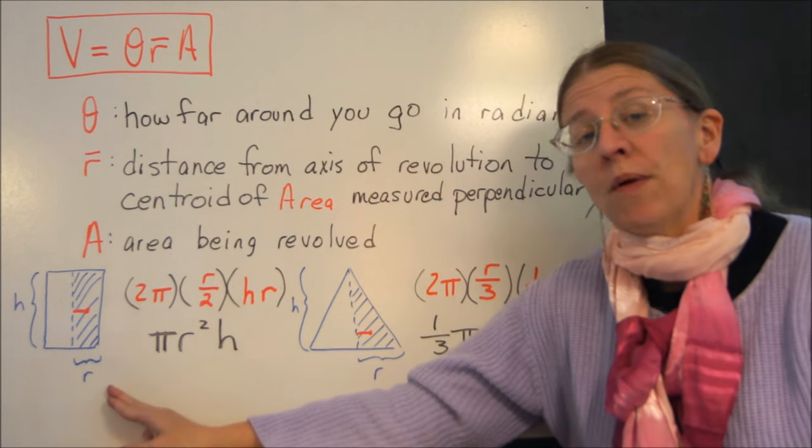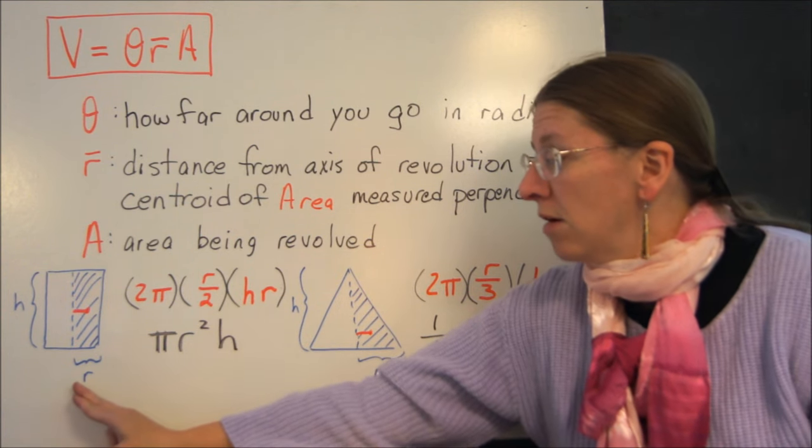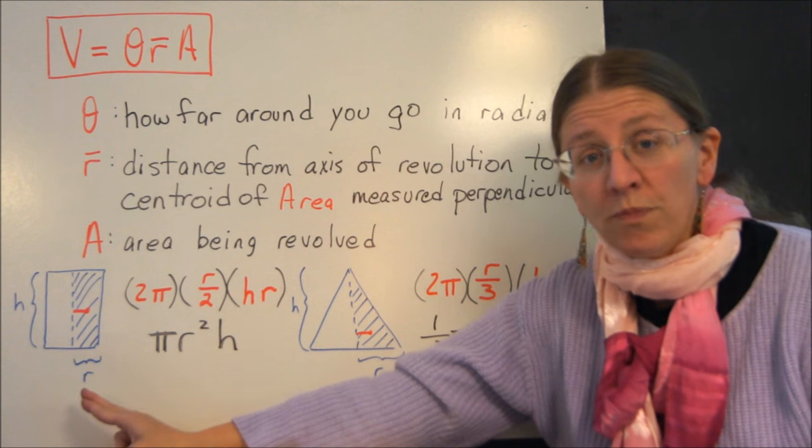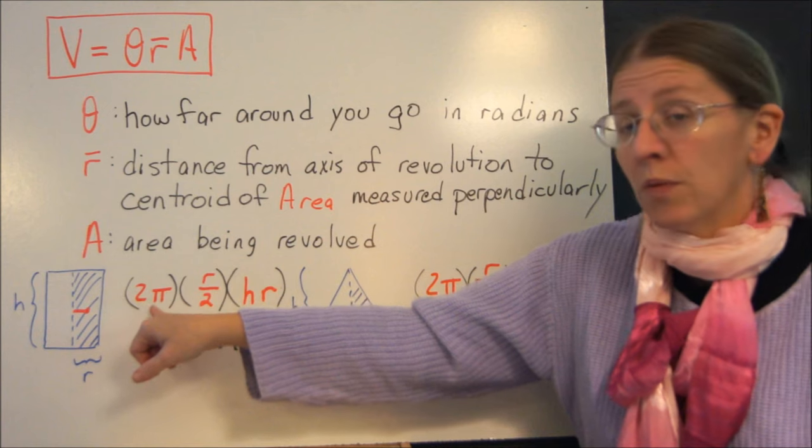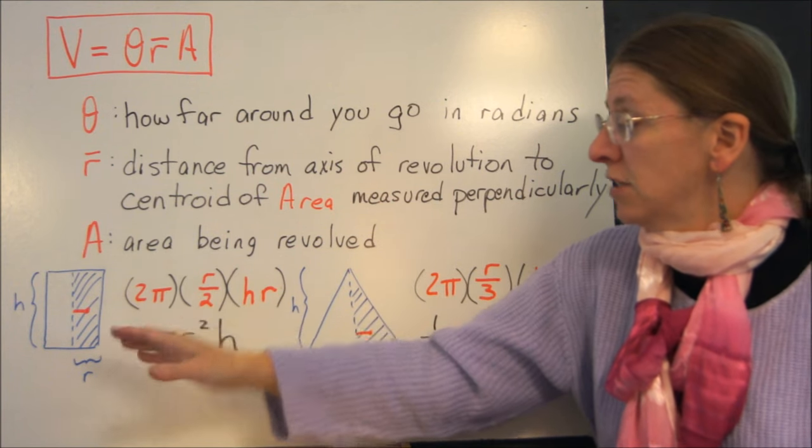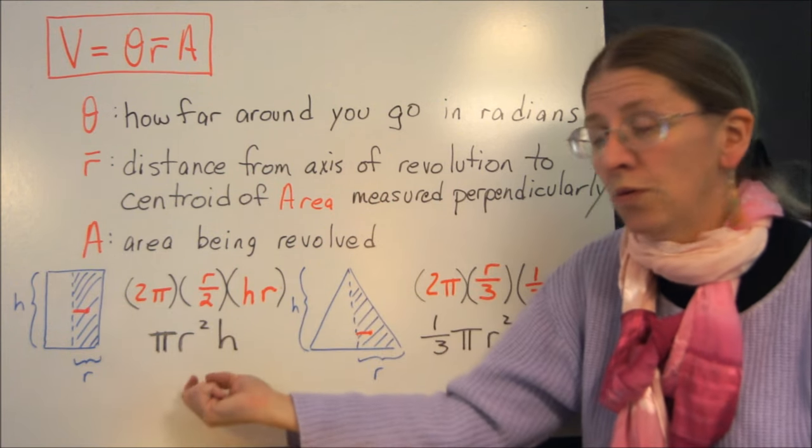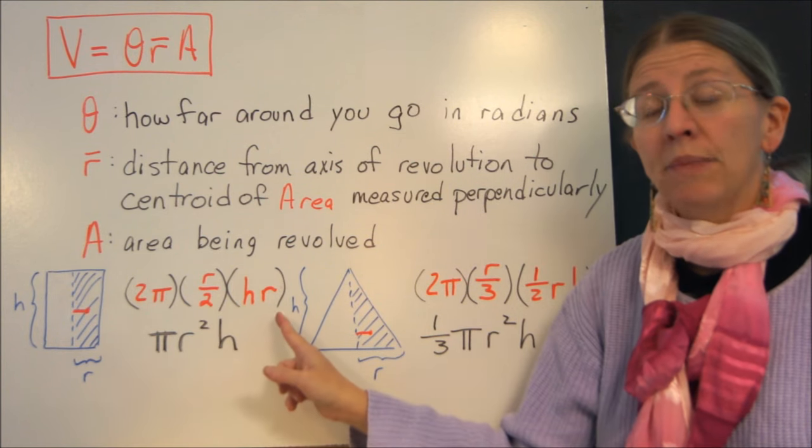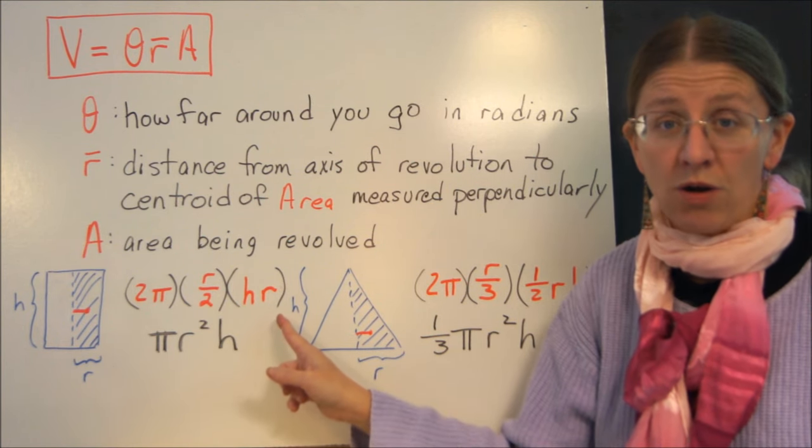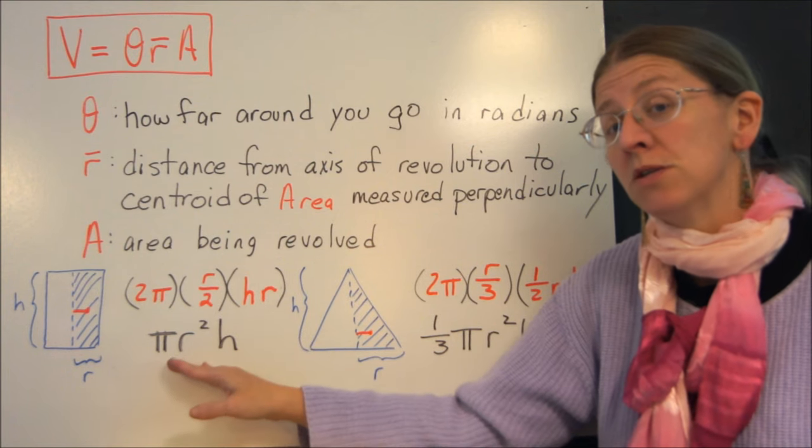So how does this work for my rectangle? If I take a base R, this is my R by H cylinder that I had just a minute ago. This is 2π, I'm going all the way around. The distance from the axis to halfway through my radius is going to be R over 2. And my area of a rectangle is HR. So this gives me exactly what I started with here.